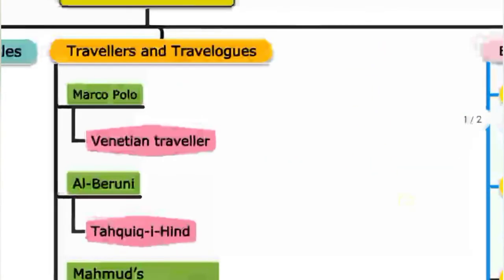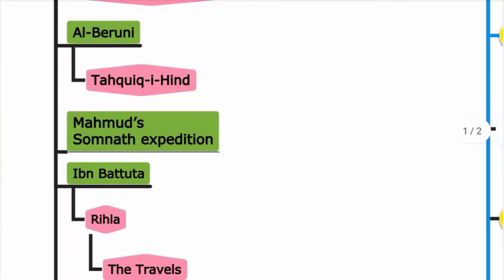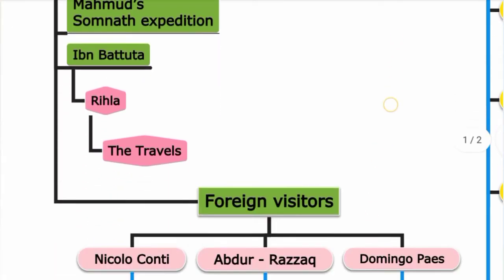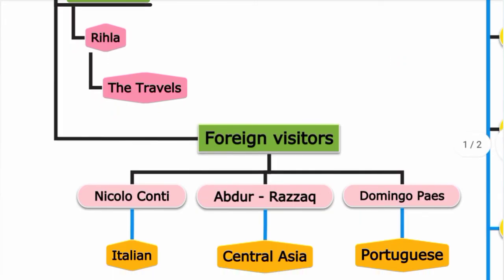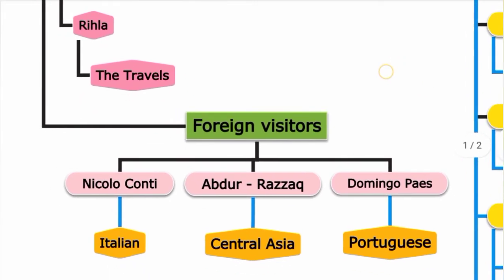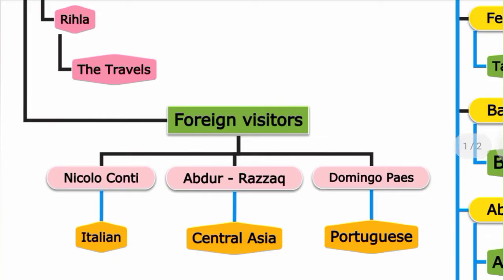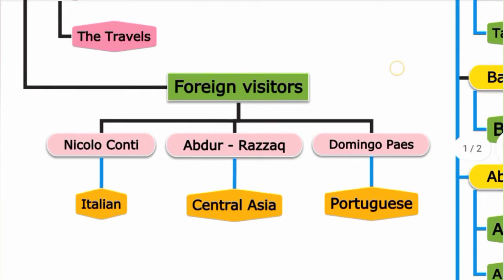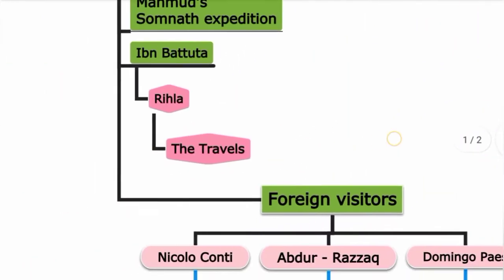To recap, under secondary sources: literary works include religious and secular literature. Travelers and travel logs include Marco Polo, Al-Beruni, Muhammad (Somnath Expedition), and Ibn Battuta. Foreign visitors include Niccolo Conti (Italian), Abdurrazak (Central Asia), and Domingo Paes (Portuguese traveler).